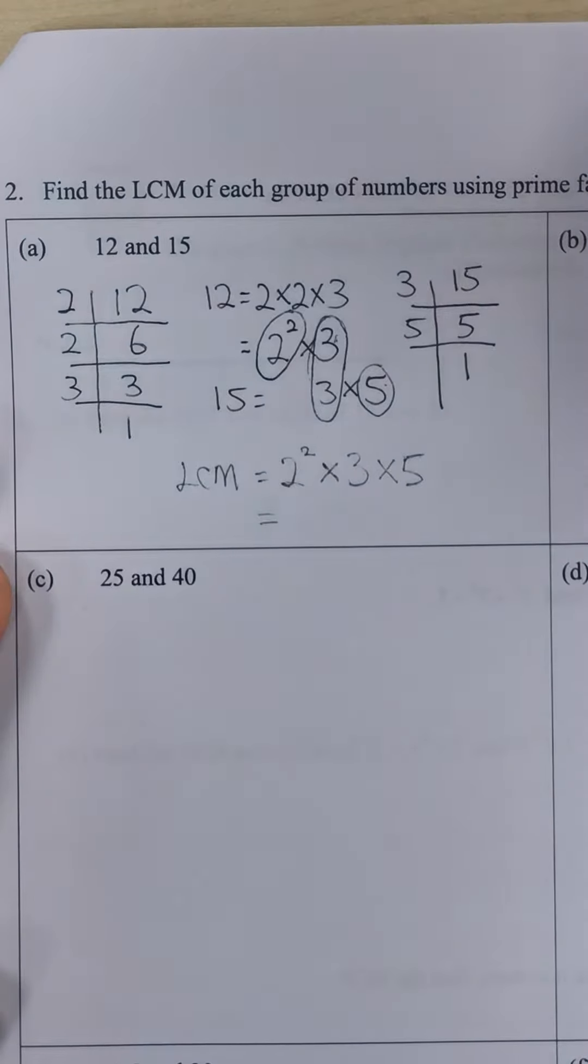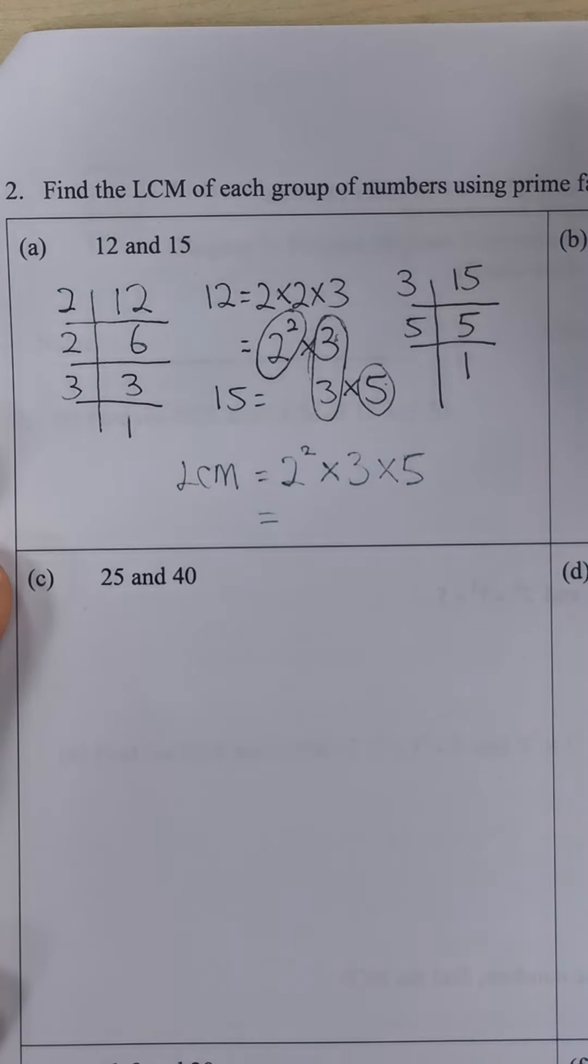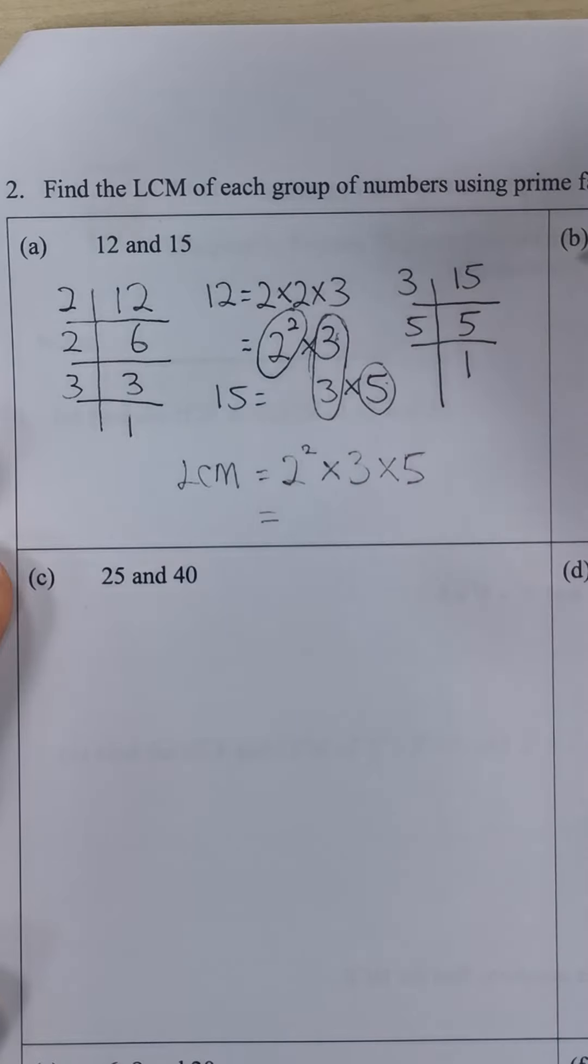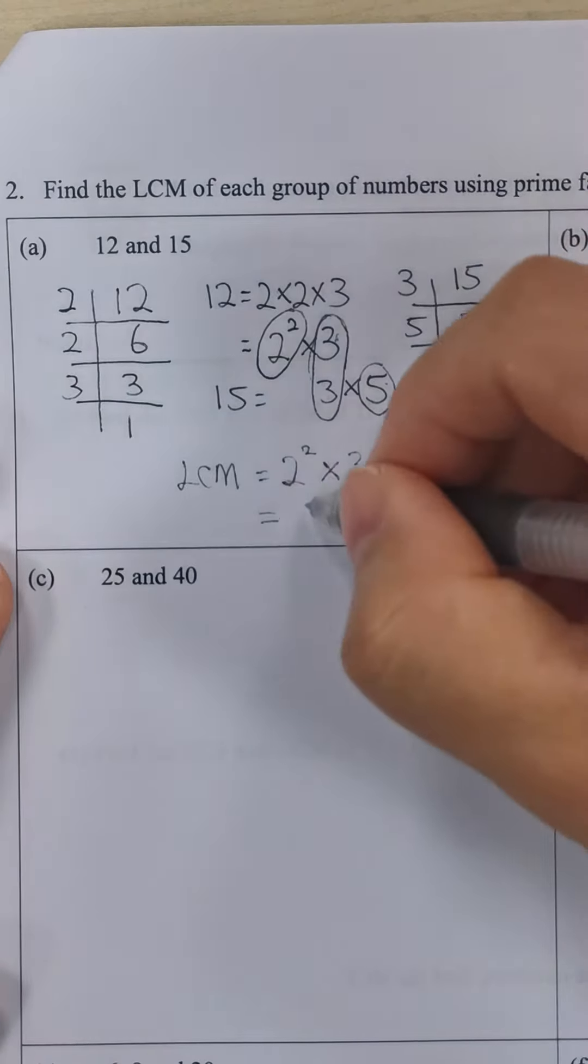You just need to use your calculator, or you can mentally count. 4 times 3 is 12, 12 times 5, we have 60.